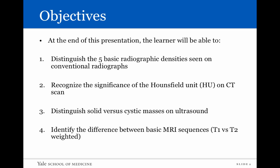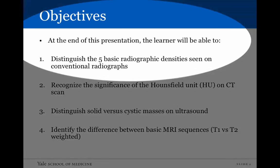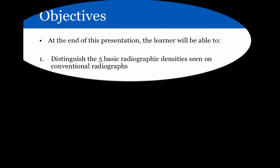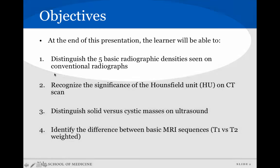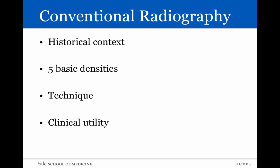The objectives are fourfold. For the conventional radiography portion of this lecture, the objective is to be able to distinguish the five basic radiographic densities on radiographs. We'll start off with conventional radiography, diving a little bit into the historical context before going into the five basic densities, the techniques that we use, and the uses from a clinical perspective.